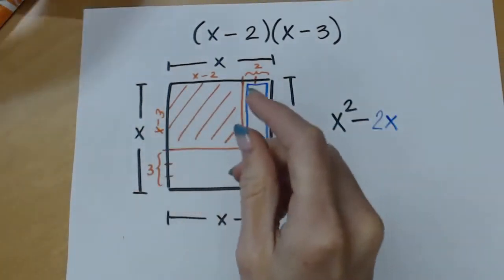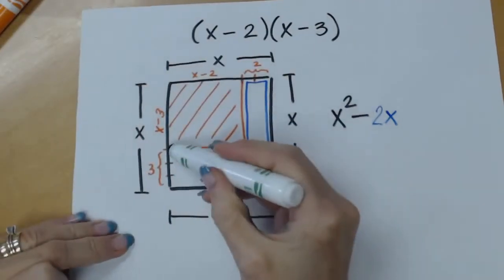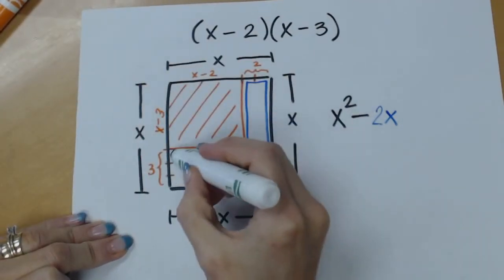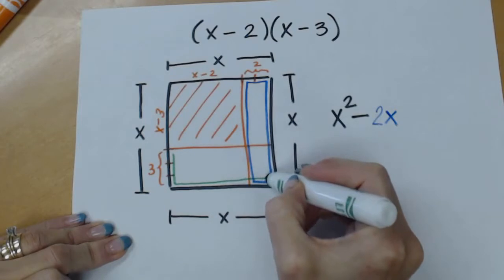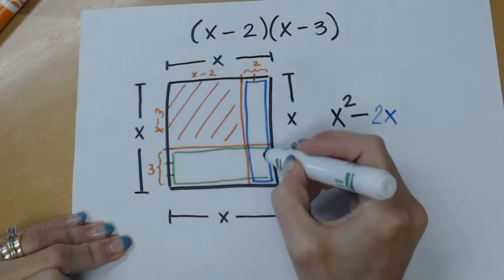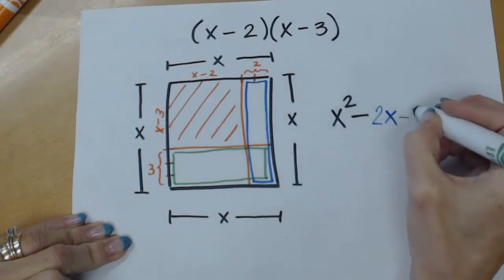And then I also have a 3 times an x. So I can subtract that out of the x squared.